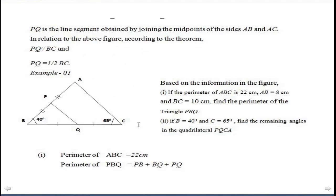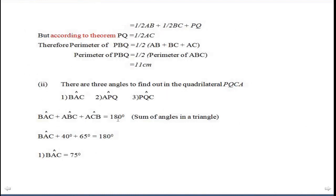Angle ABC equals 40 degrees and angle ACB equals 65 degrees. Therefore, angle BAC can be obtained as 75 degrees.